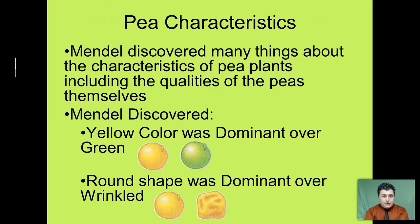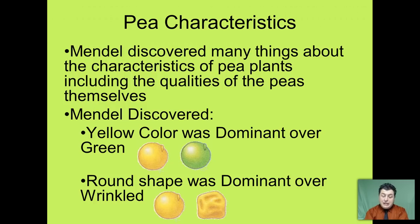Gregor Mendel, the Austrian monk who is considered to be the father of modern genetics, discovered many things about the characteristics of pea plants and their various traits. Some of the things Mendel discovered included that yellow was dominant over green in pea plants, and that the round shape was dominant over wrinkled.